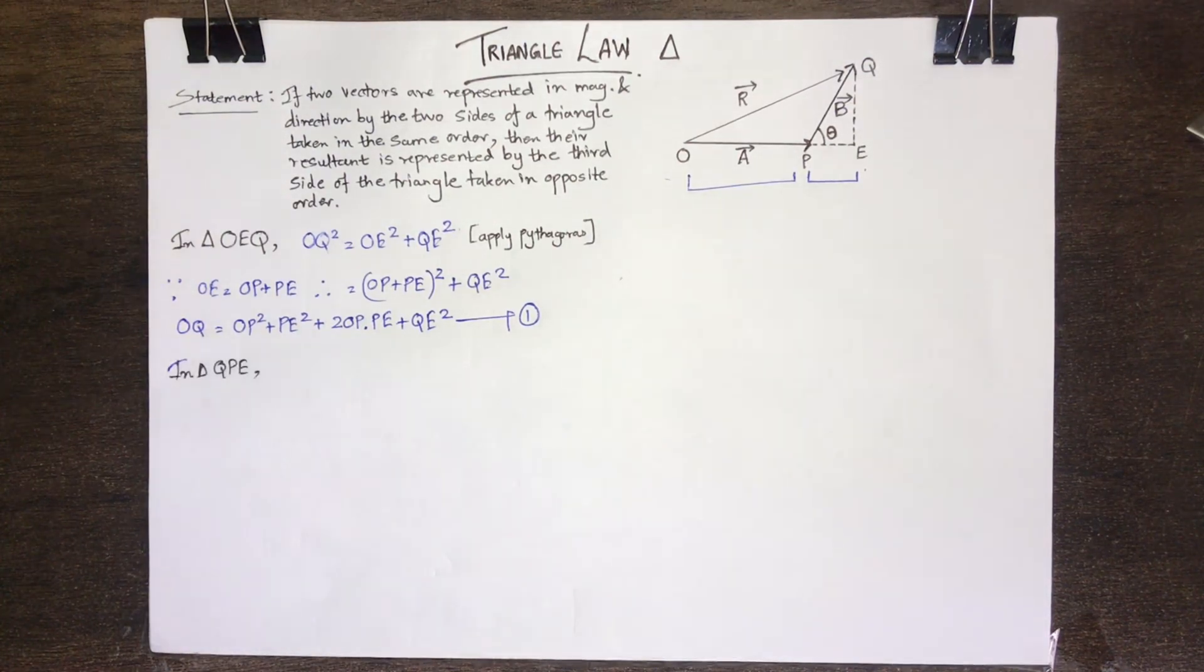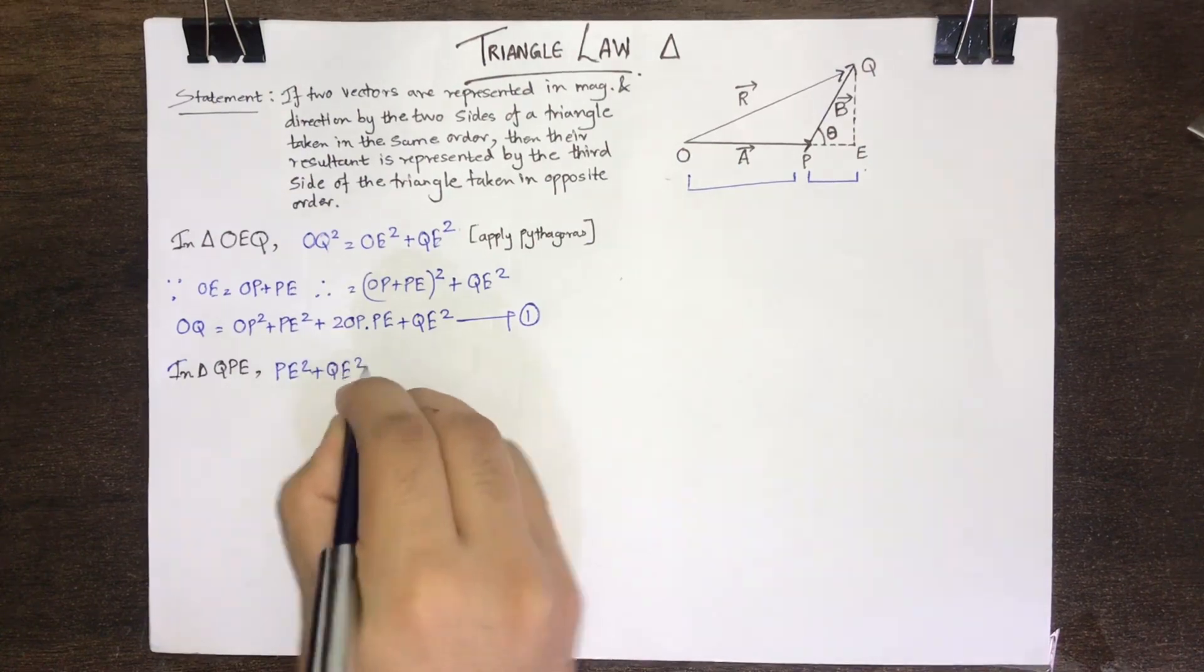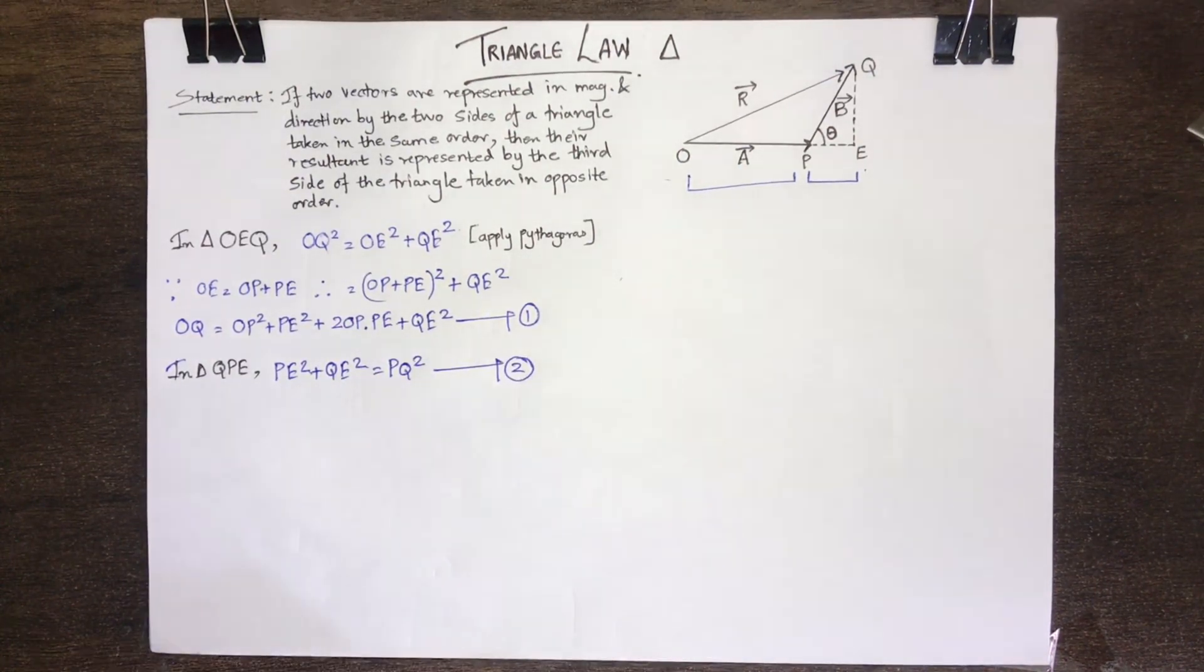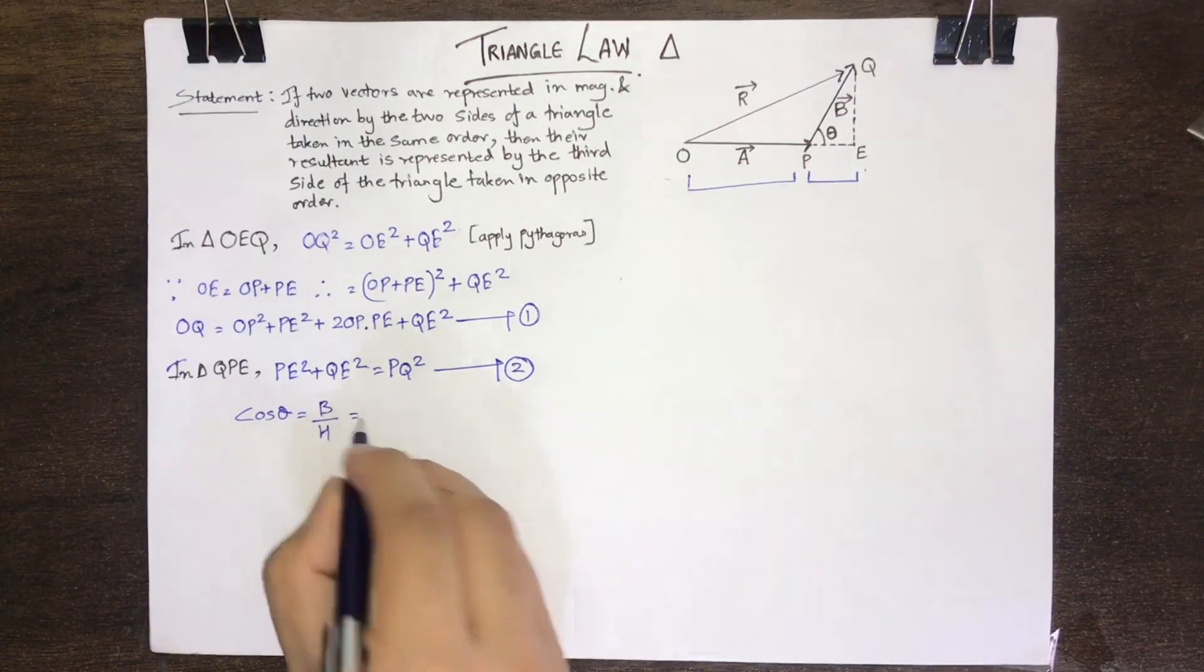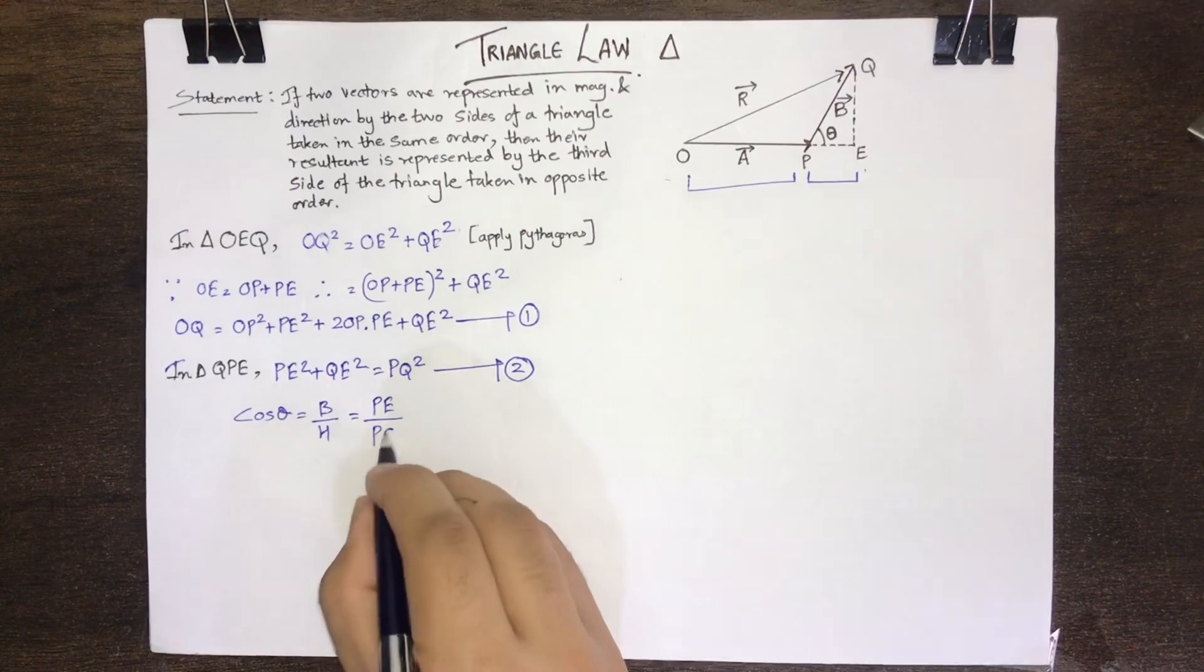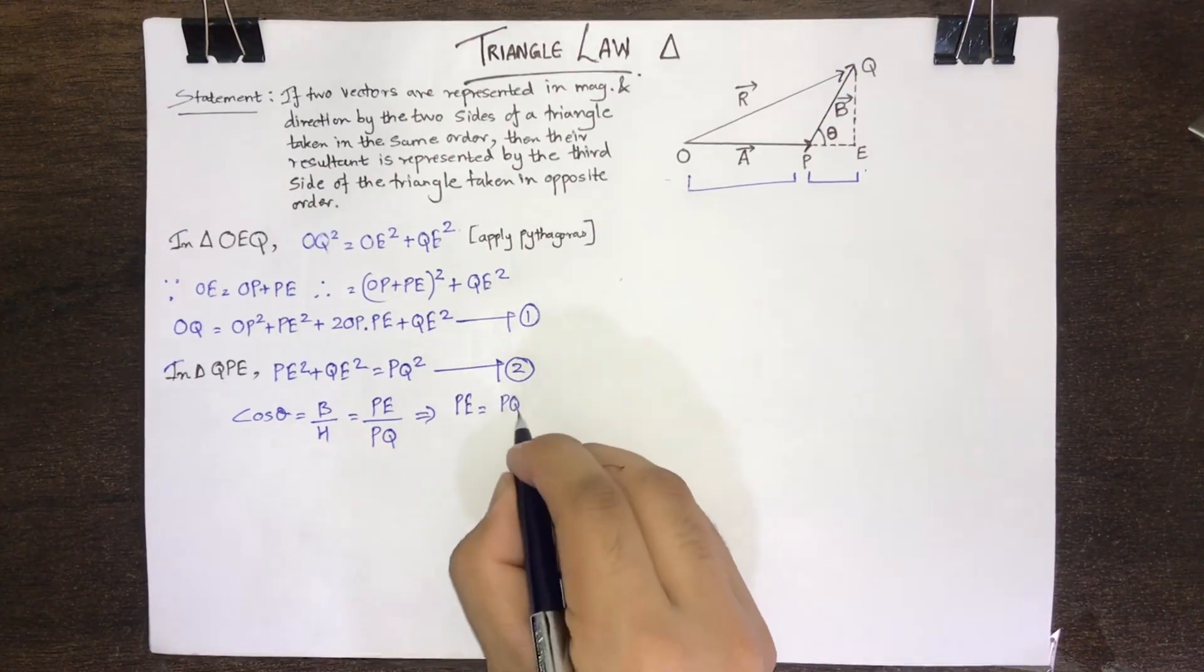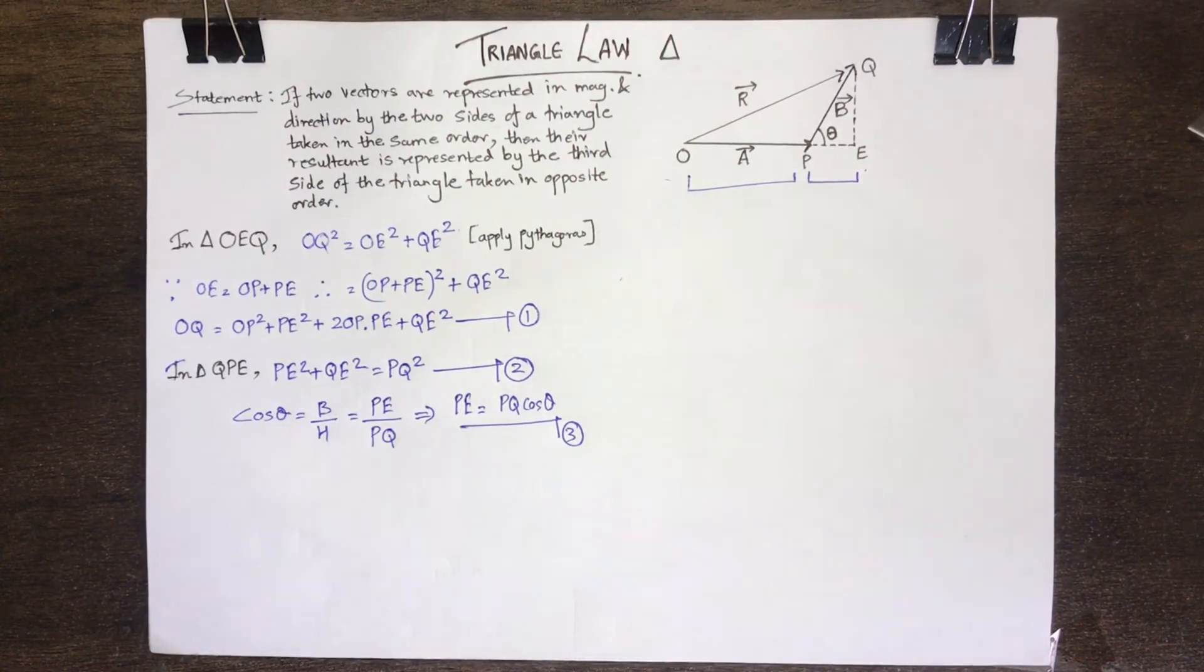Now in triangle QPE, on applying Pythagoras theorem, we get PE square plus QE square is equal to PQ square. This will be our second equation. In the same triangle, cos theta is equal to PE upon PQ, where PE is the base and hypotenuse is PQ. Therefore, PE is equal to PQ cos theta.